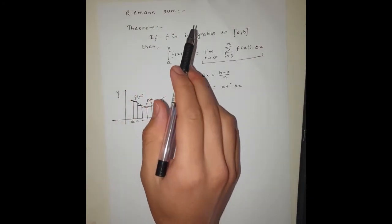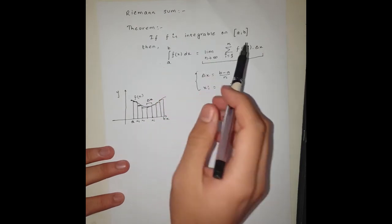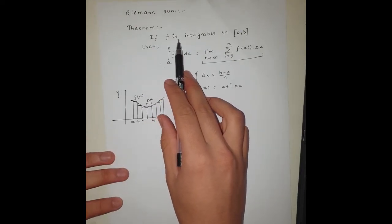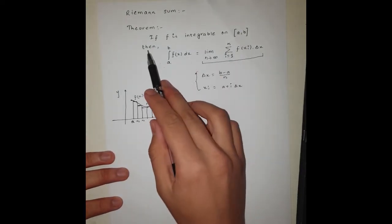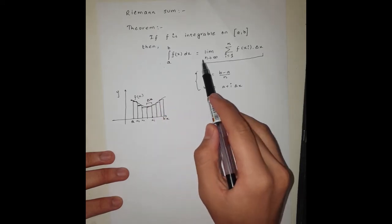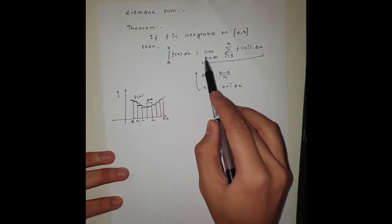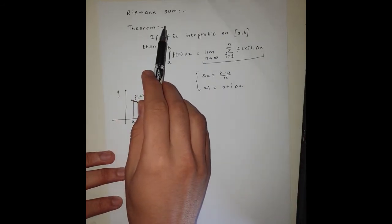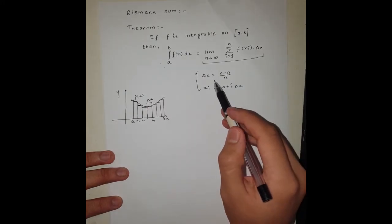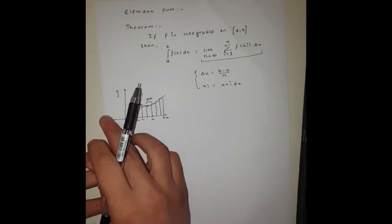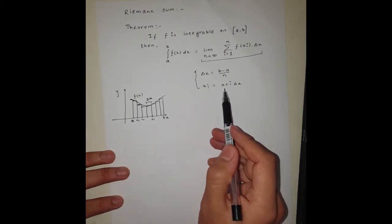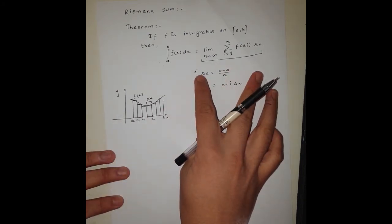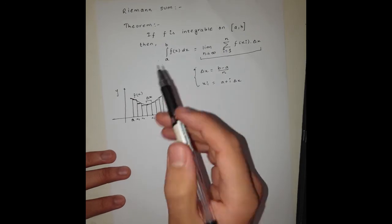For the Riemann sum, here we have one theorem that relates the Riemann sum with definite integral. The theorem is as follows: if a function f(x) is integrable on a closed interval [a,b], then we can say that this definite integral is going to be equal to this limit. This expression, the whole expression here, is what we call as Riemann sum. Here we have different variables: delta x, which is the width of the rectangle, and x_i is going to be a plus i delta x.